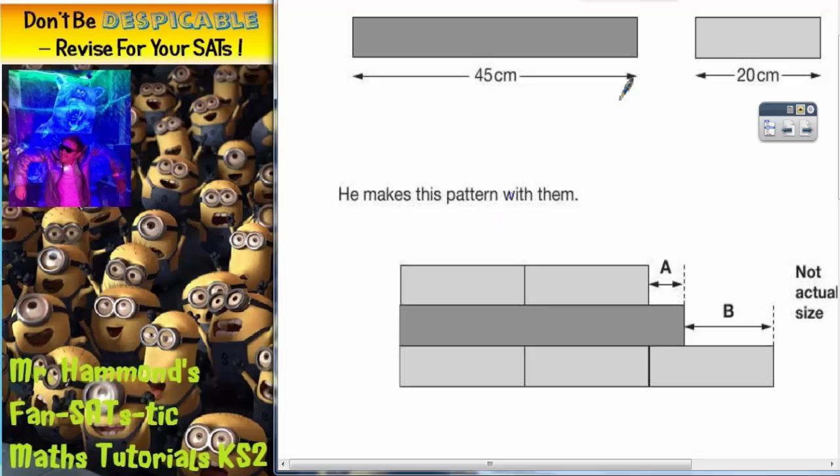So we've got the dark grey one is 45, so this distance is 45, and we've got the light grey ones are 20s, so we've got 20, 20, 20, 20, 20.